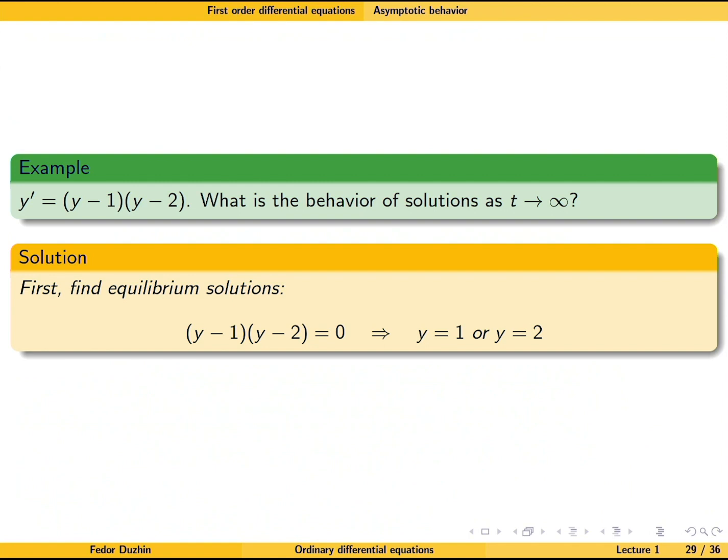Then, let me maybe try to sketch the direction field. So if here we have t and y, then notice that when y equals 1 and when y equals 2, we have equilibrium solutions.